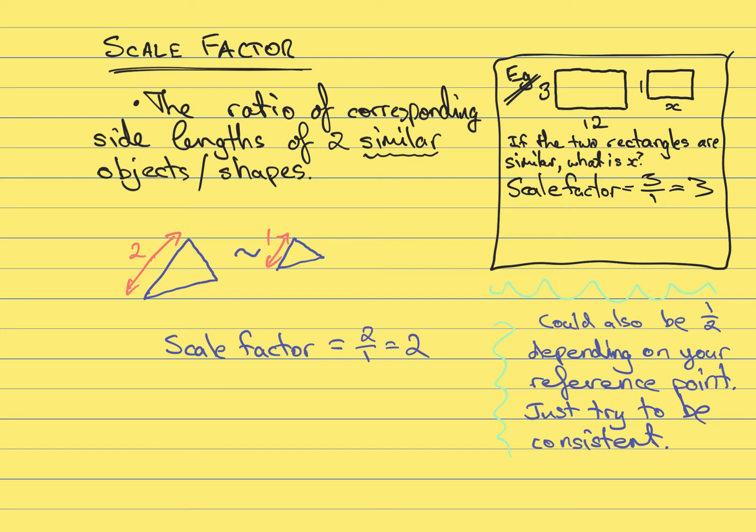So in other words, 3 times x is equal to 12, which implies that x is equal to 12 over 3, or 4. So the side length that we're looking for, the value of x, is 4.